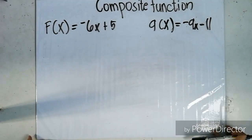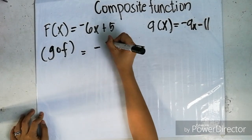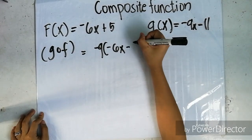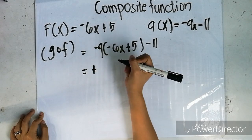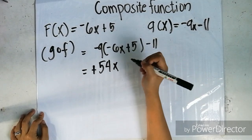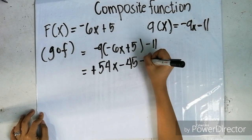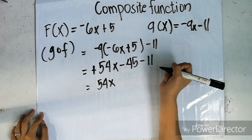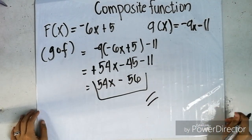Next, let's find g of f. Write g of f, then negative 9 times the quantity negative 6x plus 5, copy negative 11. Negative 9 times negative 6 equals positive 54x, and negative 9 times 5 equals negative 45, copy negative 11. Combine like terms: negative 45 minus 11 equals negative 56. So g of f equals 54x minus 56.